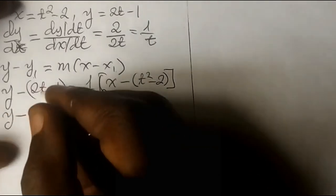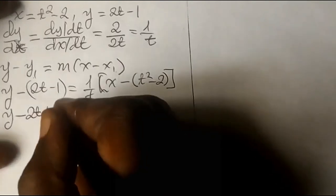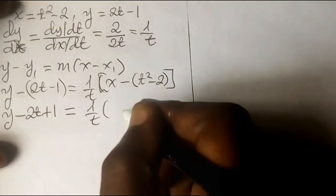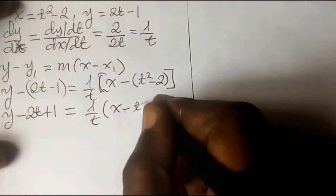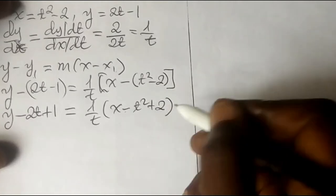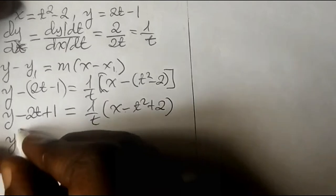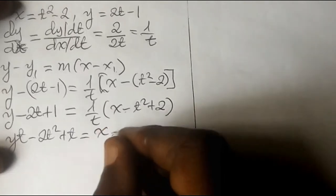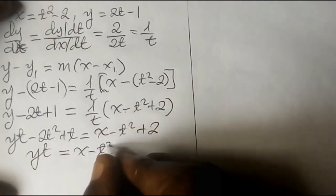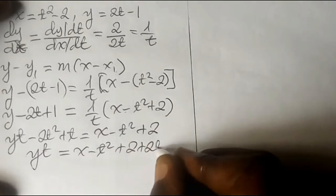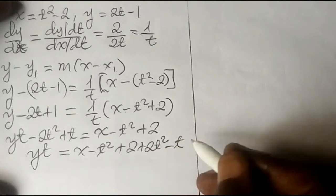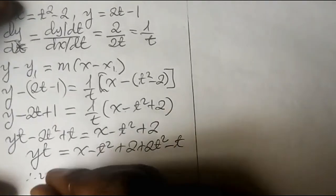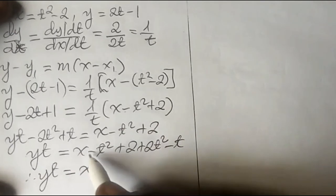Expanding the left side: y minus 2t plus 1 equals 1 over t times (x minus t squared plus 2). Multiplying through by t gives: yt minus 2t squared plus t equals x minus t squared plus 2. Simplifying by sending the t squared terms across: yt equals x minus t squared plus 2 plus 2t squared minus t, which gives yt equals x plus t squared minus t plus 2.